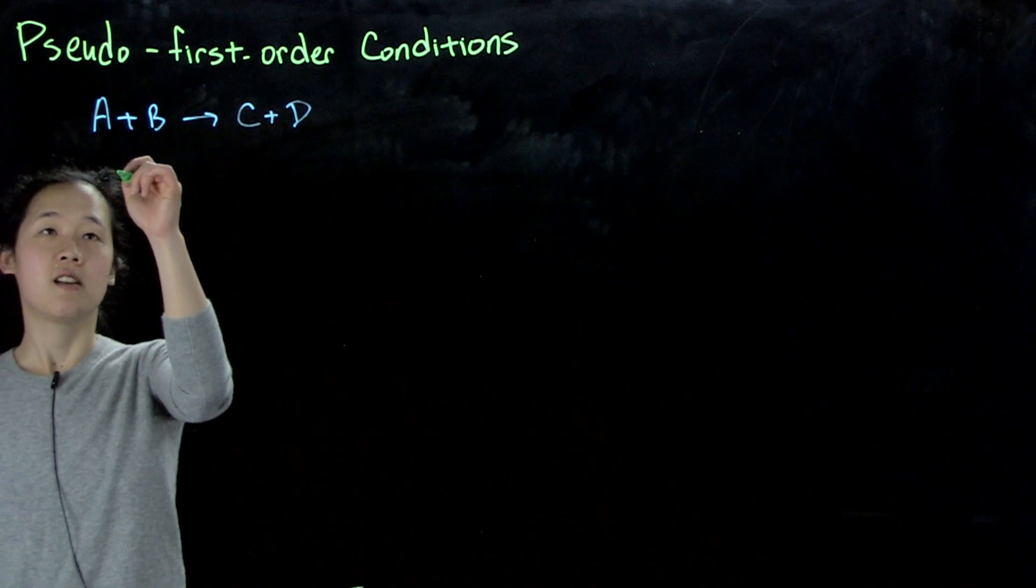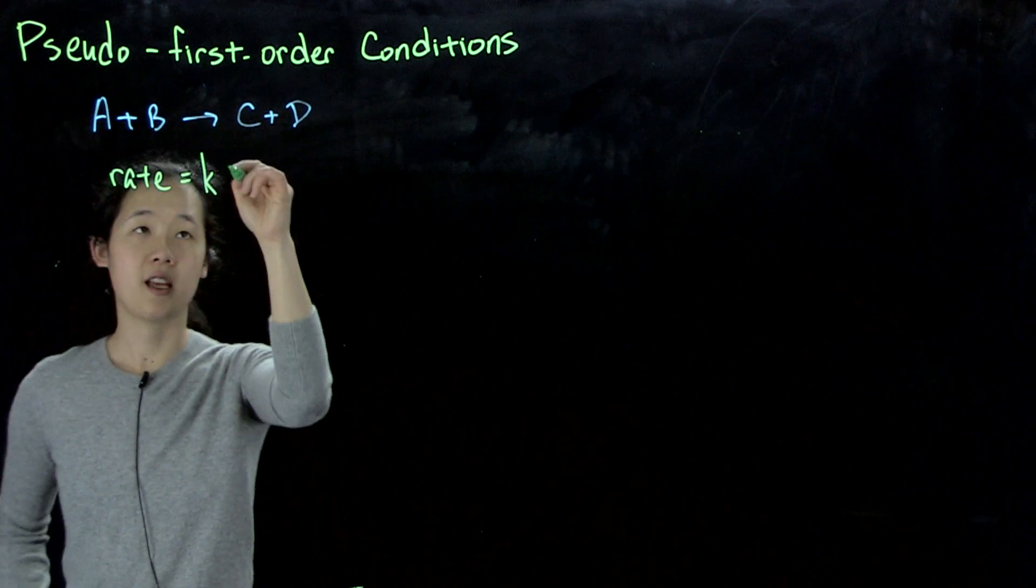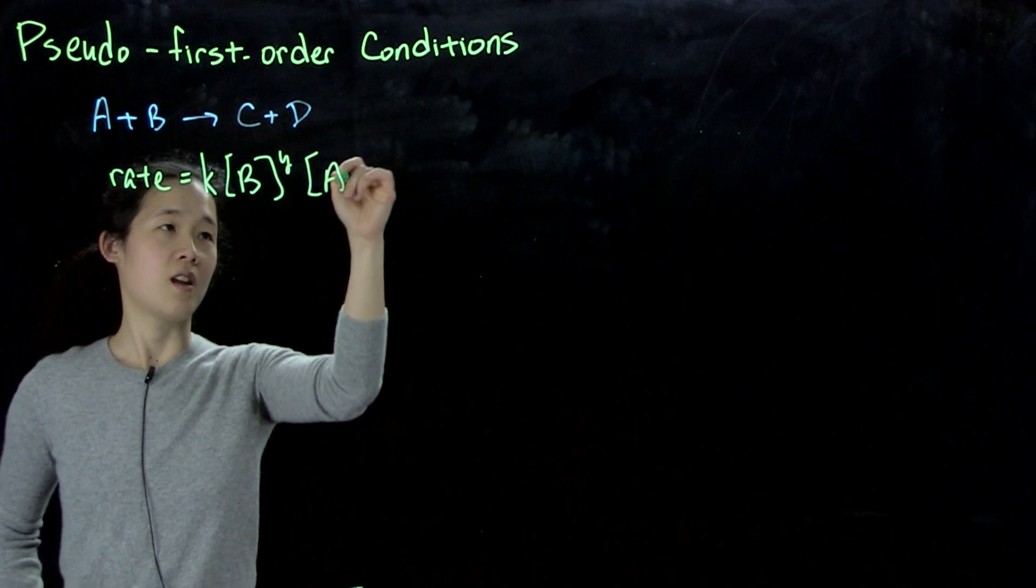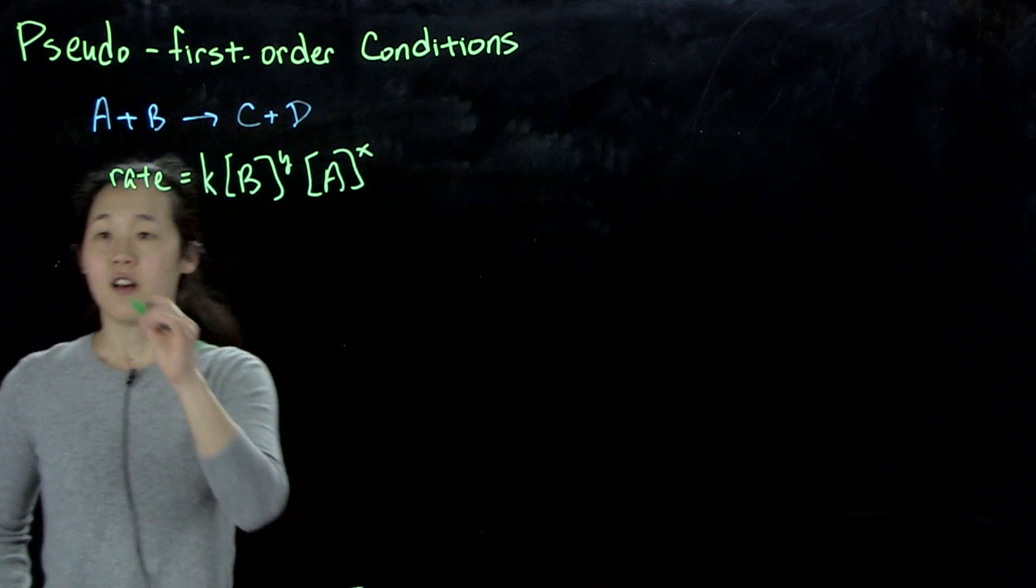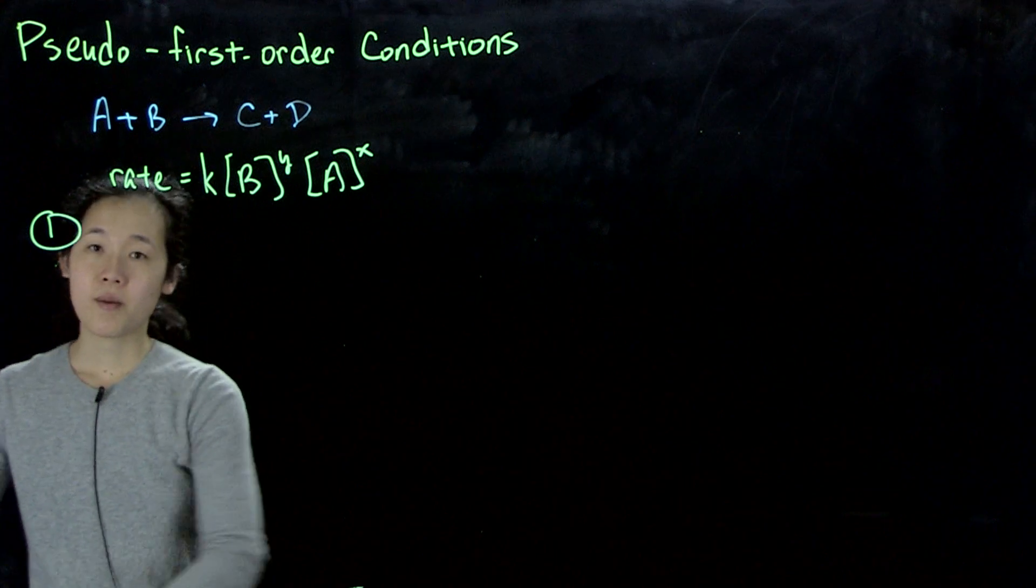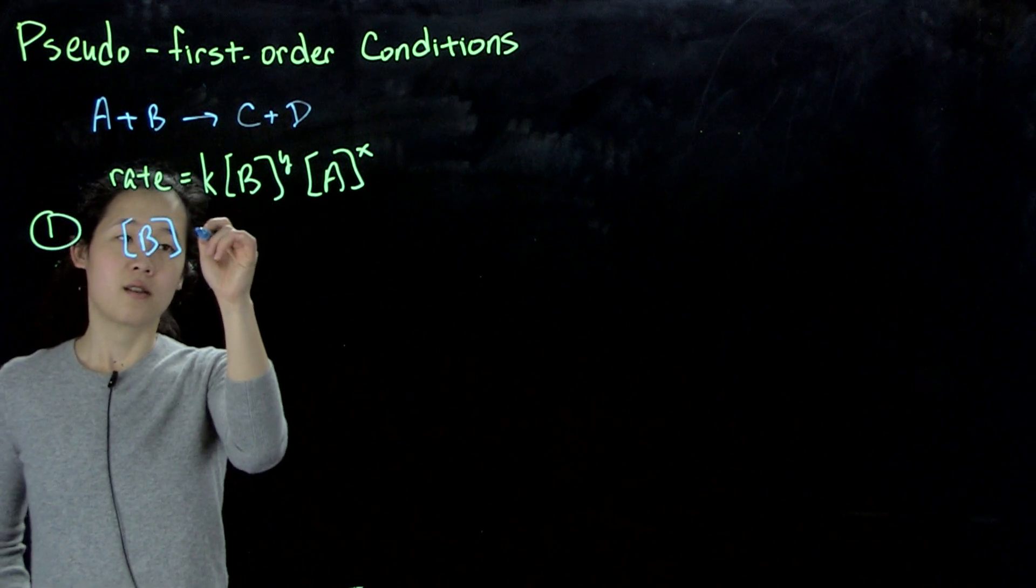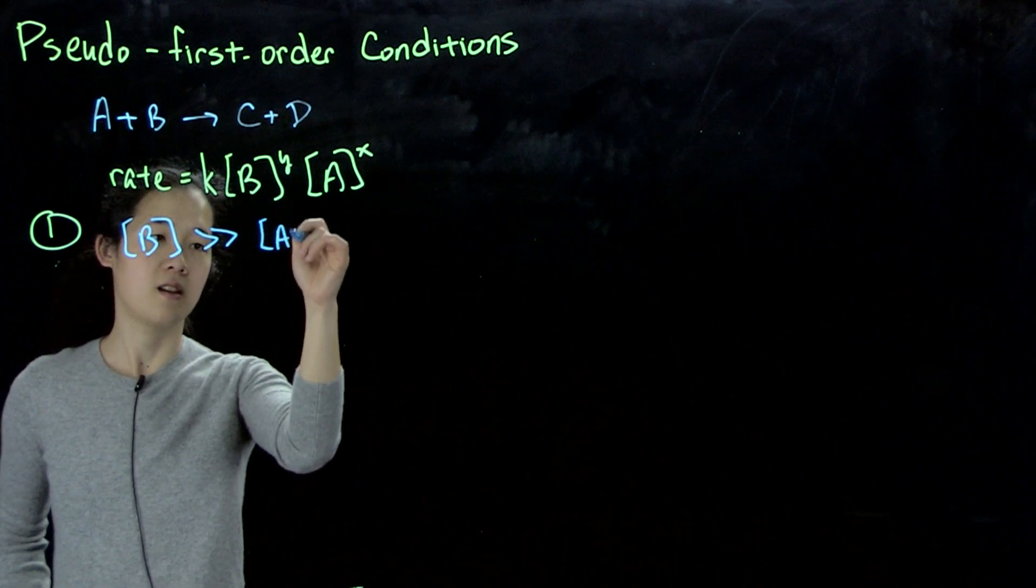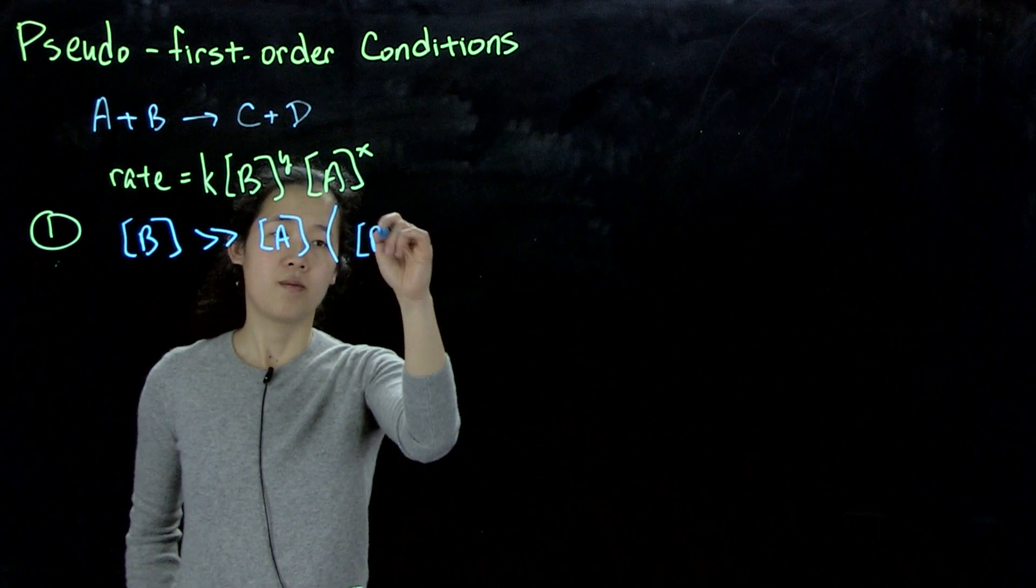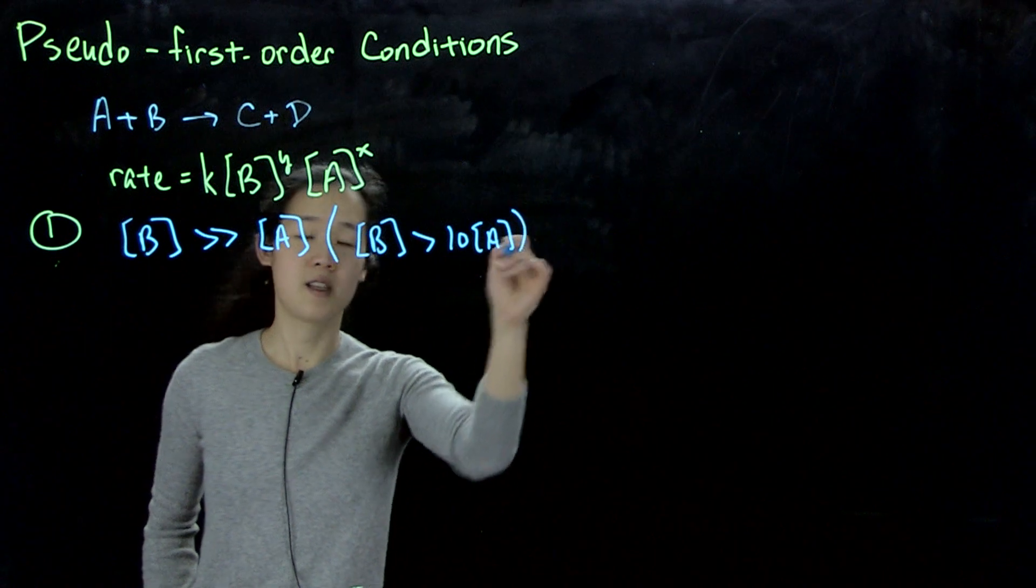If our rate was equals k, sum k, and then I'm going to switch up the order, sum B to the y, A to the x. For step one, under pseudo-first-order conditions, what we did was we picked that B would be greater than A. And then typically under pseudo-first-order conditions, we were saying that B is greater than 10A. So this is our pseudo-first-order condition.